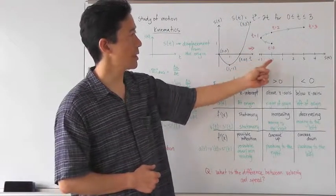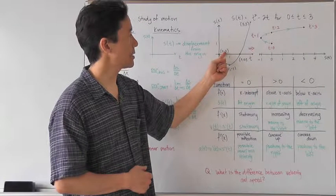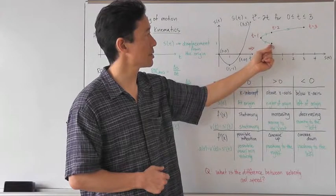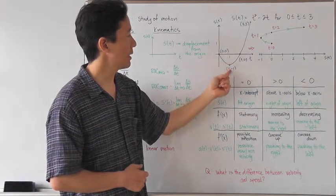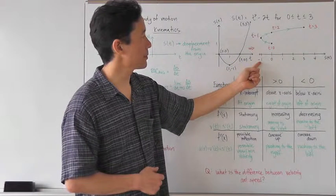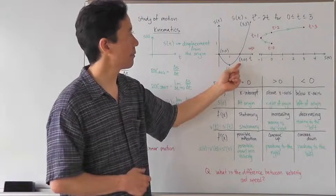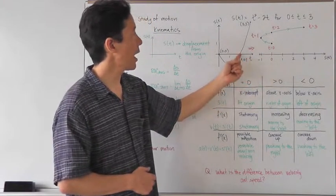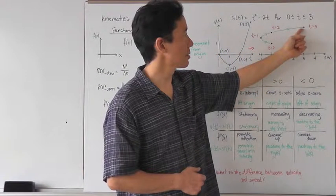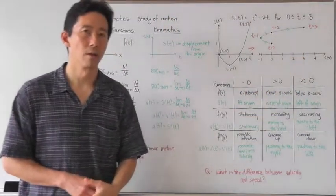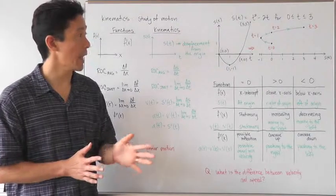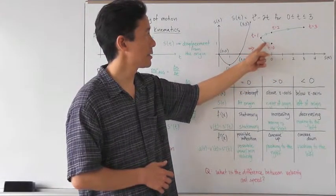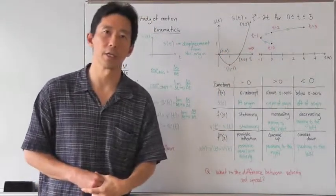If we transfer that information to the one-dimensional graph: when t equals 0, s of t is equal to 0. When we move to one second, the displacement is now negative 1. When t equals 2, the displacement is back at 0. And when t equals 3, the displacement is now at 3. You just have to make that simple adjustment to transfer the information from a two-dimensional graph to a one-dimensional graph. Notice also that I've included the direction of the path — these little arrows tell exactly which direction the particle is moving.